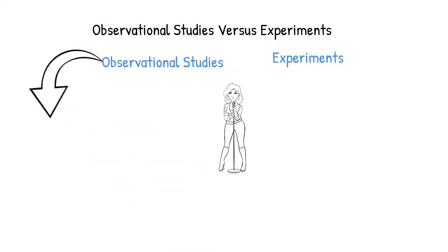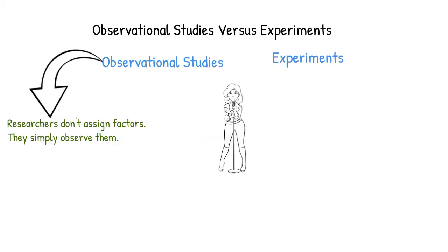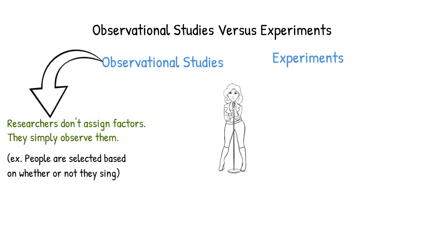In an observational study, researchers don't assign factors to participants — they simply observe them. For example, people can be selected for the study based on whether or not they sing, or perhaps how much or how well they sing. But the researcher makes no attempt to manipulate these factors. While we might find a relationship between variables, it is not possible to determine if one thing causes another because there might be some lurking variables.